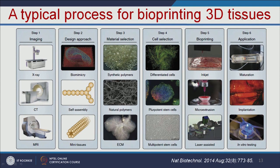This is a typical process for bioprinting 3D tissues. The first step is imaging — if you want to make a particular organ like heart or liver, you do imaging using X-ray, CT scan, and MRI to get a complete idea about the organ. Then based on that, you select the design approach — which can be biomimicry, self-assembly, or mini tissues. Once you select the design approach, you select the suitable material, such as synthetic polymers or natural polymers, which should mimic your extracellular matrix. These techniques will be explained in detail later.